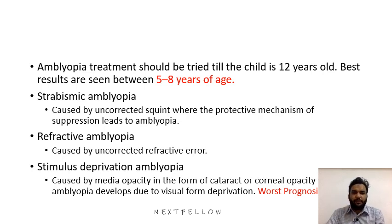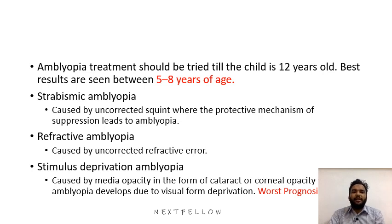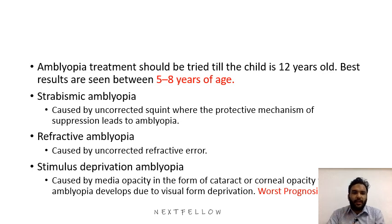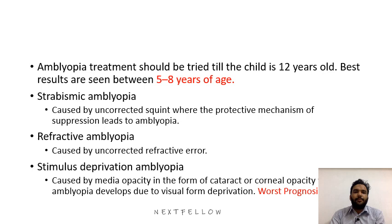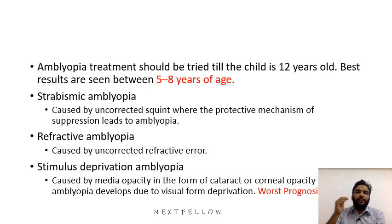Refractive amblyopia is due to uncorrected refractive error. We see a lot of this in patients because kids do not tend to report that they cannot see the blackboard properly — they usually read with one eye or assume that is simply how vision is. That is why we usually get these patients late, and I stress that kids should always have an eye checkup every 2 years after the age of 6.